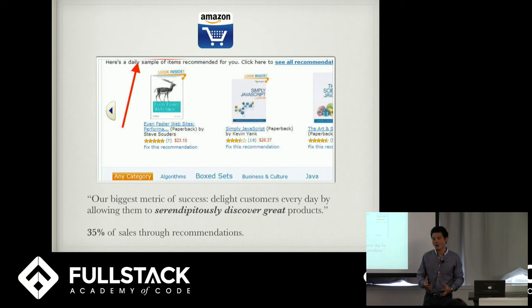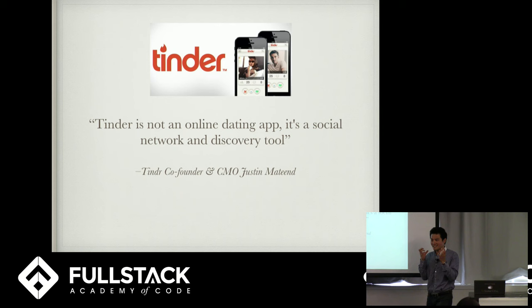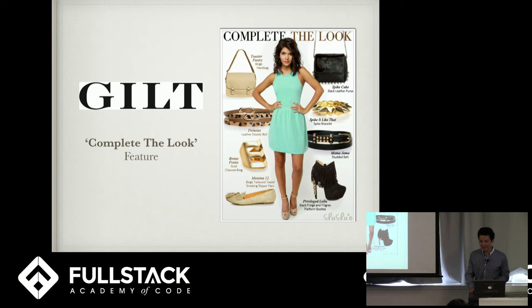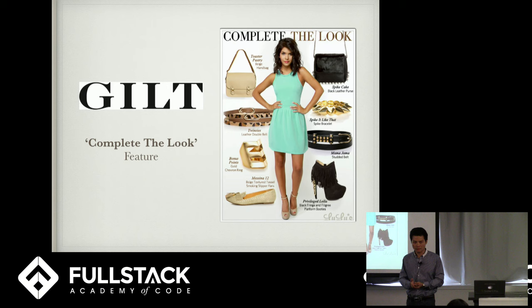The key here is to serendipitously discover great products — things that you don't even know you want yet. Tinder's CMO very strongly said Tinder is not an online dating app; it's a social network and a discovery tool. Gilt's 'complete the look' feature: if you want to buy a dress to go to a dinner party, why don't you also purchase a pair of Prada shoes to go with your dress? You didn't think about it, but now you are.